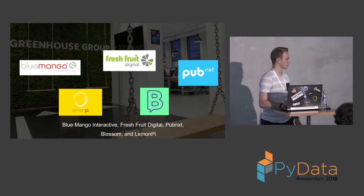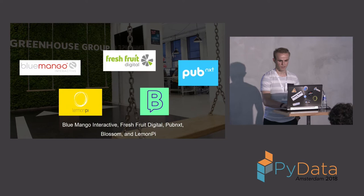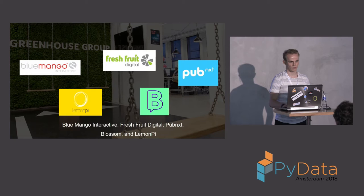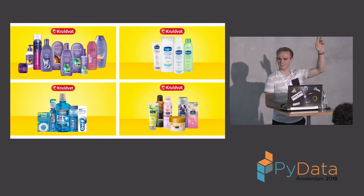So I'm now at Greenhouse Group. It's a digital marketing company which has five digital marketing companies under it — it's an umbrella company. Maybe you know some of those. They also have multiple hubs, and one of them is the creative hub. And they make these kinds of advertisements — product compositions for Kruidvat.